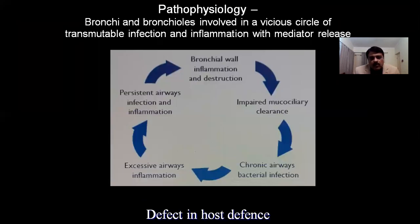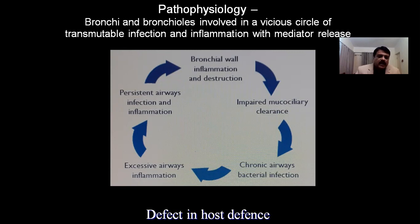Bronchi and bronchioles are involved in a vicious circle of transmutable infection and inflammation with mediator release, causing inflammation of the bronchial wall, impaired mucociliary clearance, and chronic airway bacterial infection. The cycle is completed with infection, inflammation, and destruction of the bronchial walls.